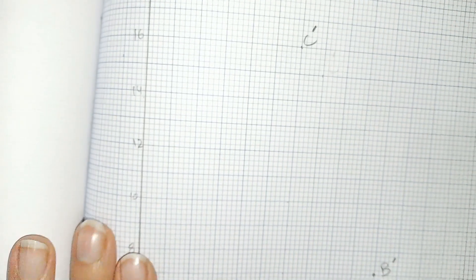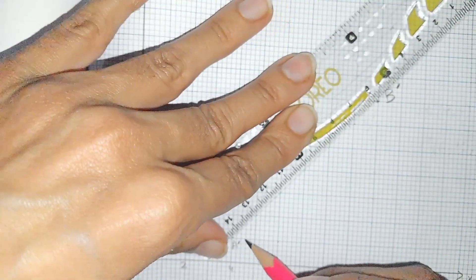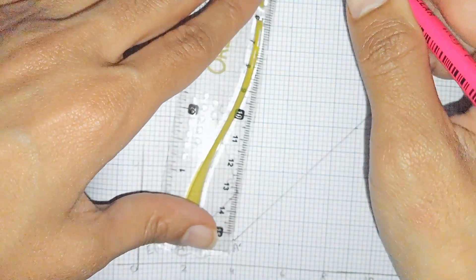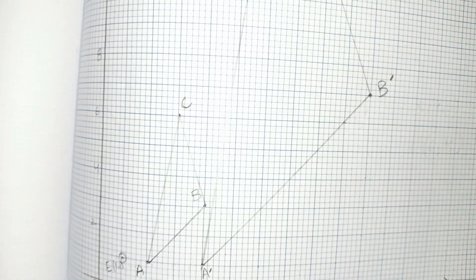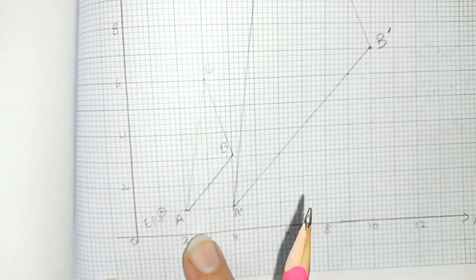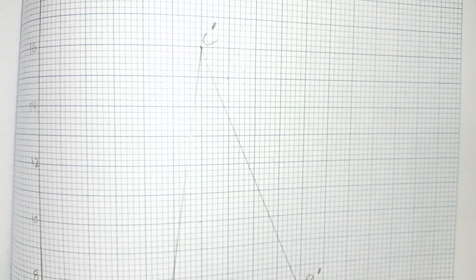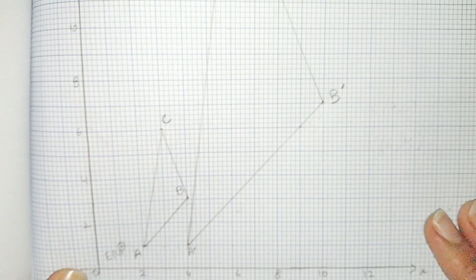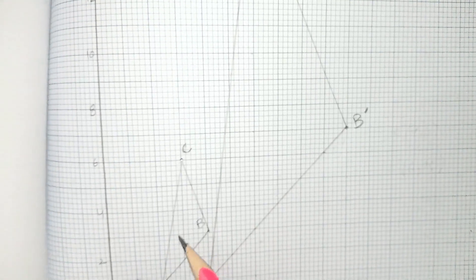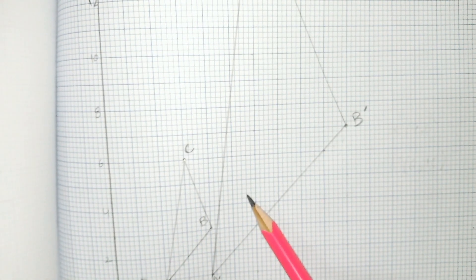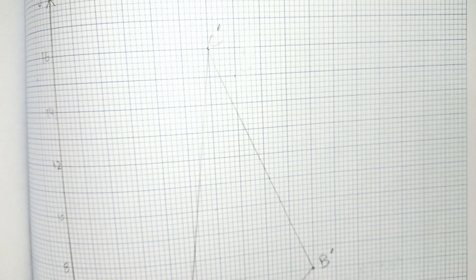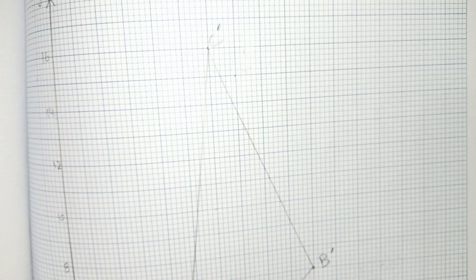Now we join A prime with B prime, and B prime with C prime, to complete the enlarged triangle. This is the enlargement of the original figure. We write the coordinates of A prime, B prime, and C prime. Question number 10 is solved and clearly illustrated on the labeled diagram. I hope you understood these questions very well. Thank you very much for watching. Take care of yourself, Allah Hafiz.